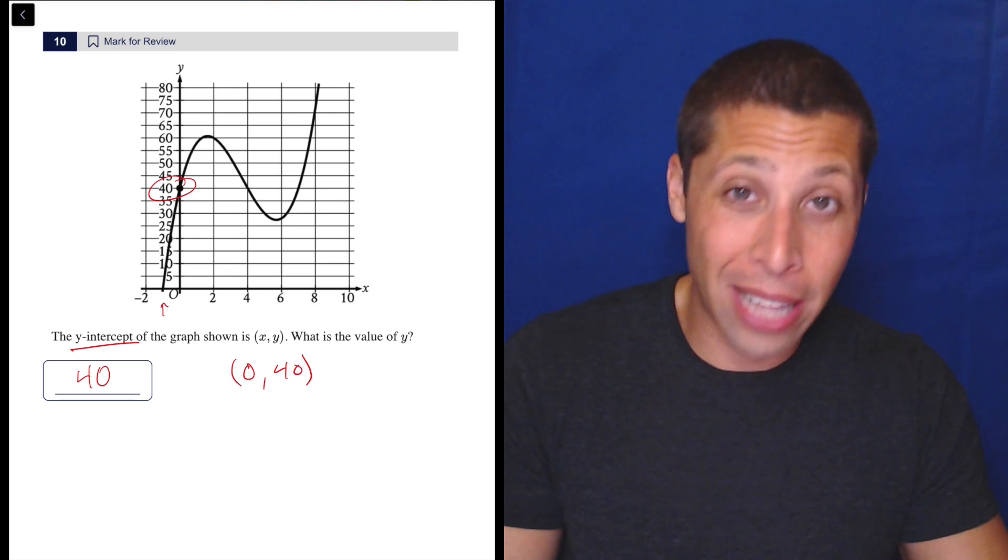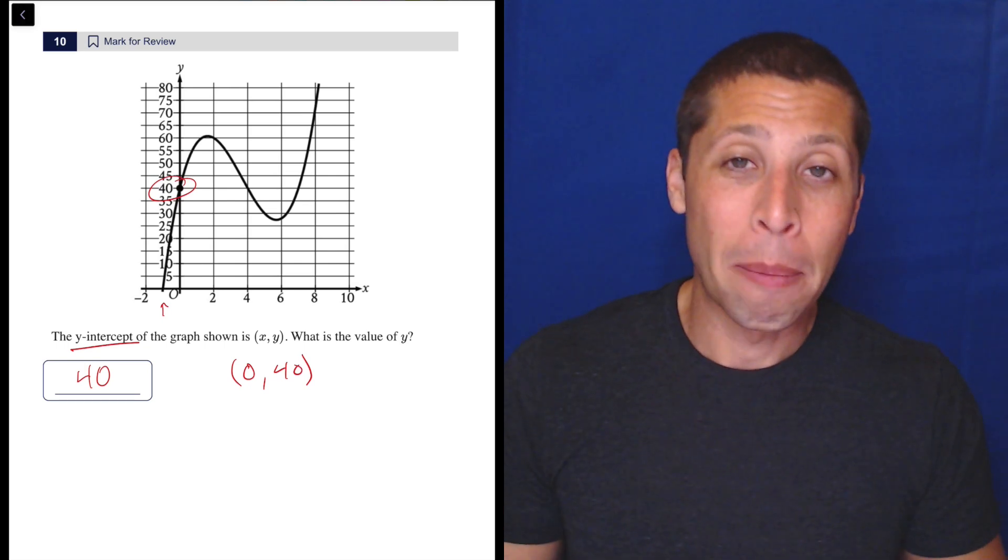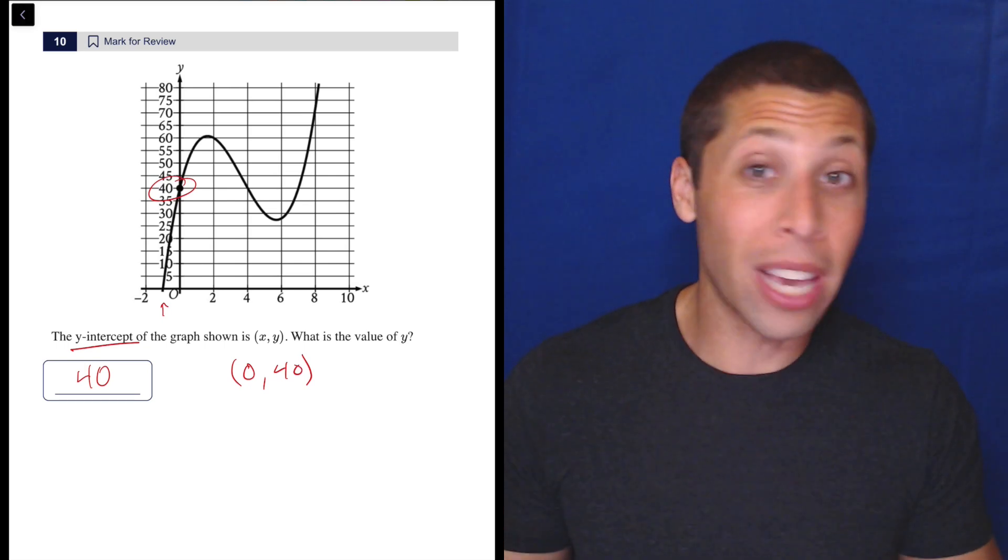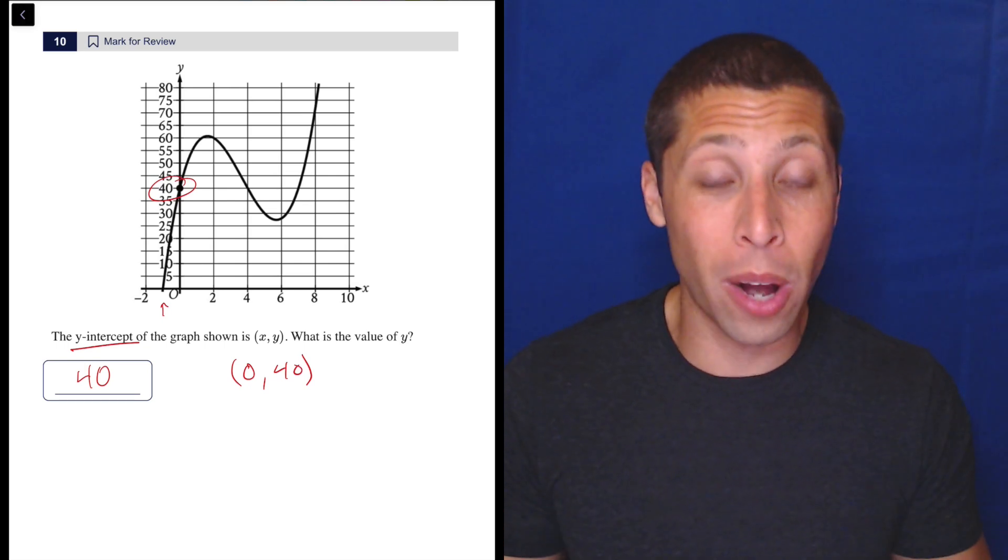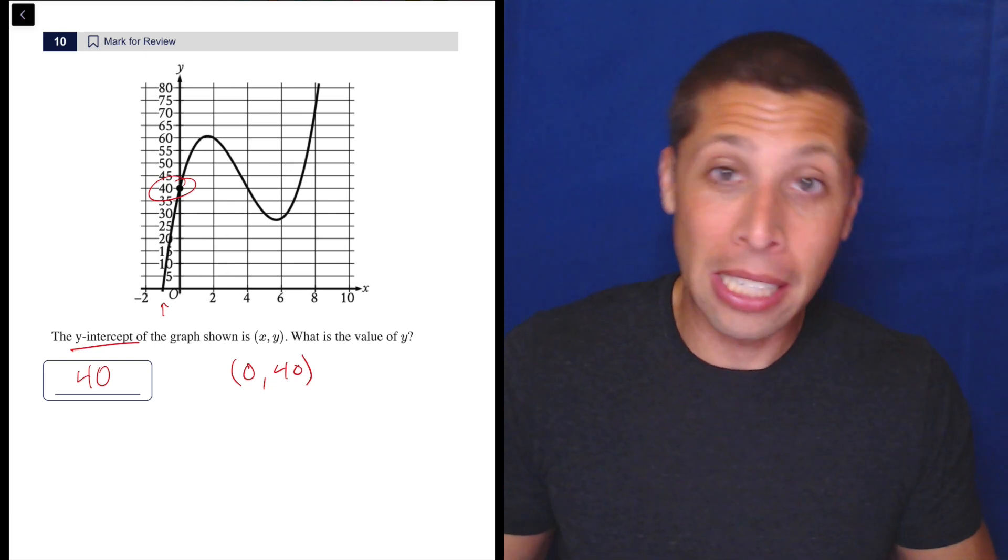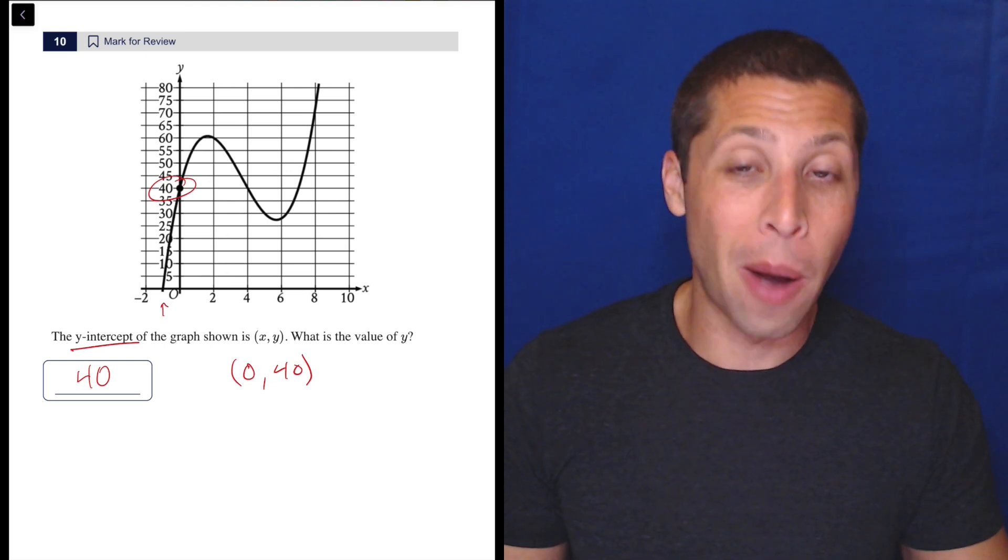Unless you've just never taken a math class before—I don't mean to make you feel bad, but I am genuinely curious. Like, who's getting this stuff wrong? Do we not know the difference between x and y? Do we not read carefully? Tell me, comment—why are we getting this wrong?